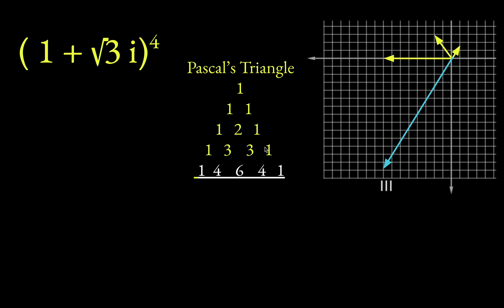1, 3, 3, 1 would be cubic. And here we have a quartic or fourth order polynomial. So we'll have 1, 4, 6, 4, 1.